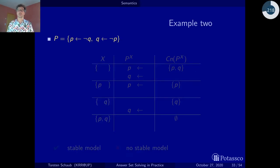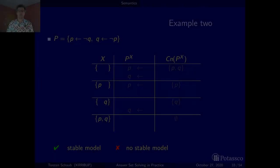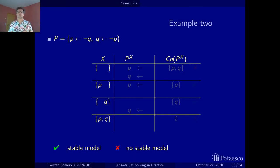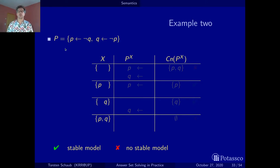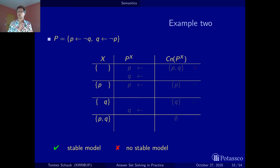Here's another example. The second example has a non-deterministic flavor: we get p unless we have q, and we have q unless we get p. It's a bit like flipping a coin — you get heads unless you have tails, and tails unless you have heads. So there are two alternative outcomes to be expected. Let's see how this works out. We have two atoms and hence four possibilities, and we go through the reduct and consequences.